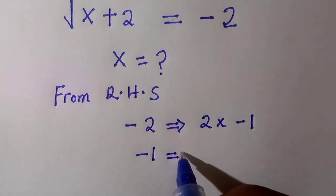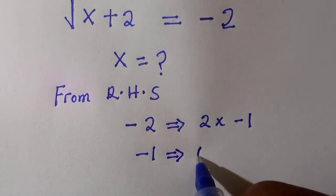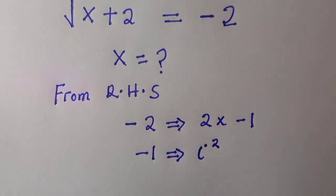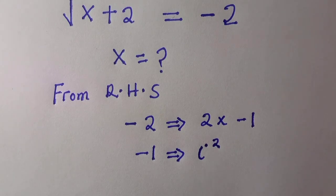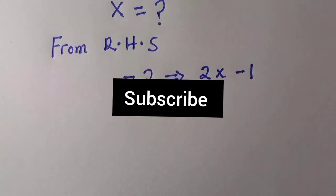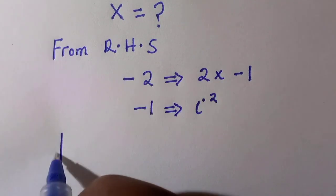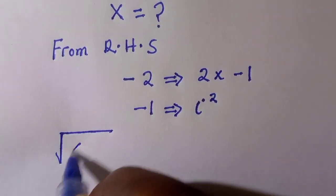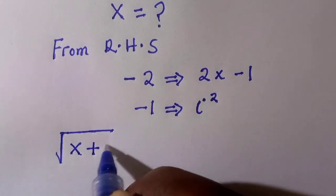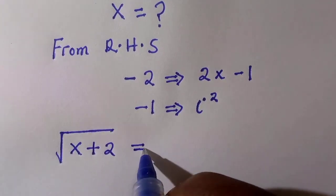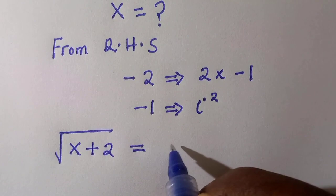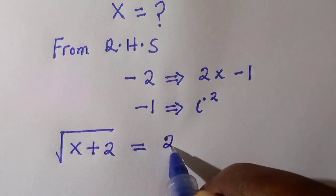The reason for this is looking at this problem, we might think there is no solutions, but let's see how we can get the solution. Minus 1 is known as i squared in a complex space, and we are going to replace it in the equation.